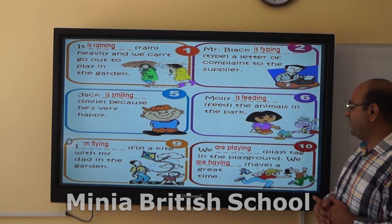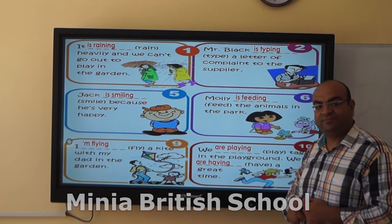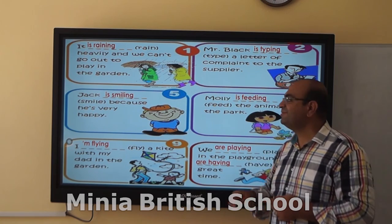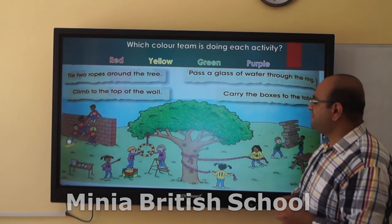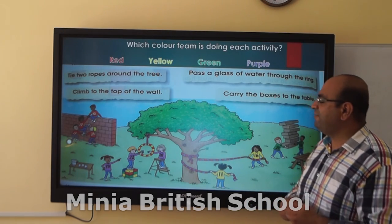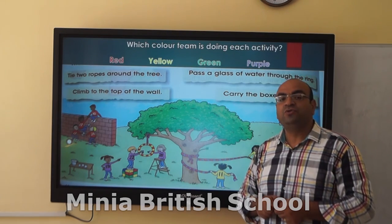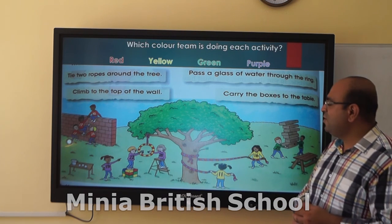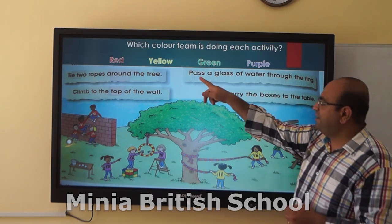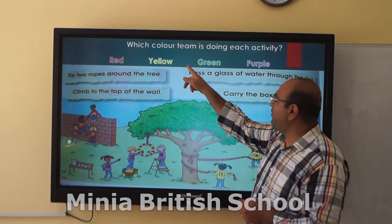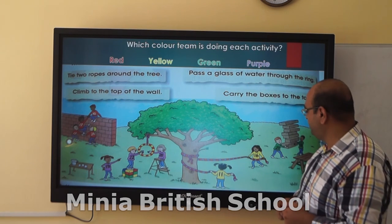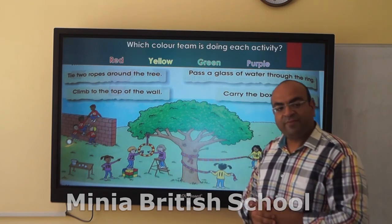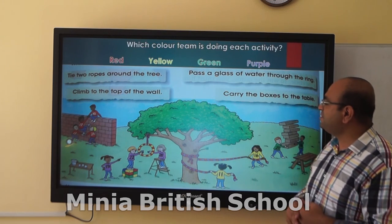We are having a great time. Was it difficult? Of course not. Next we have our school book. This little exercise has teams in red, yellow, green and purple. These are the teams.